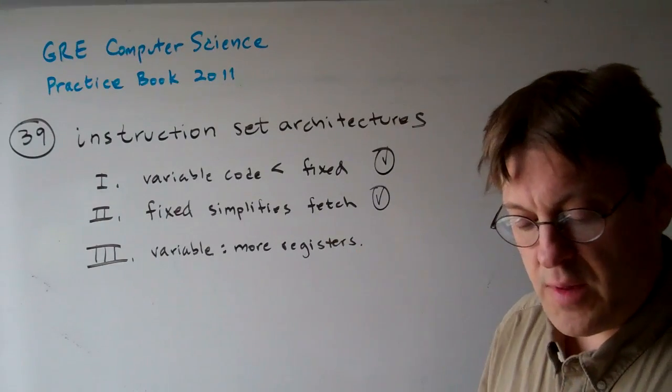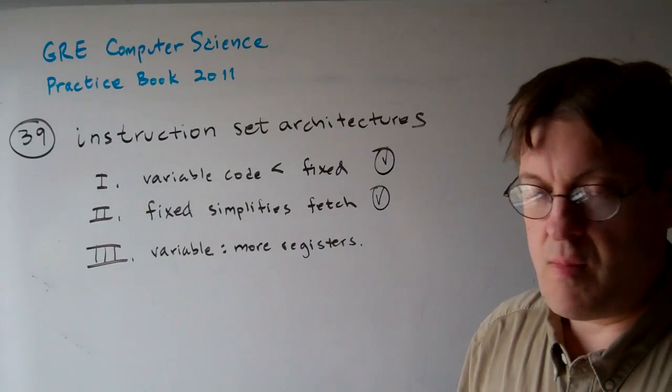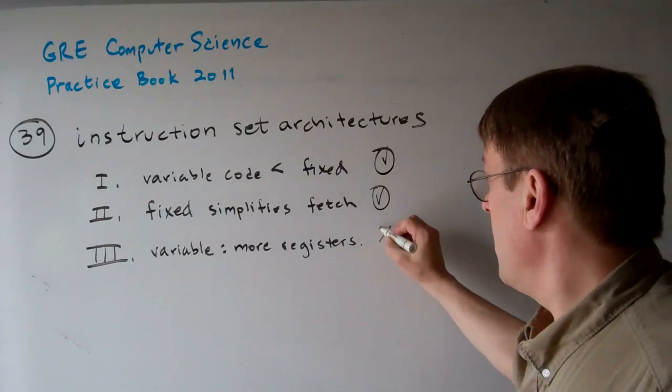Three says variable length ISAs require more registers. No, it's just the opposite.